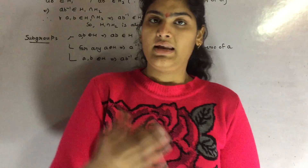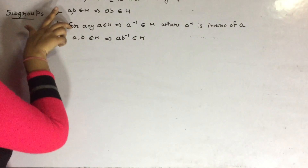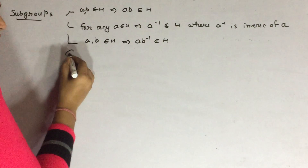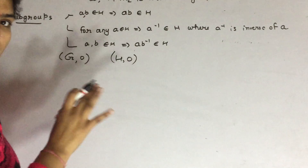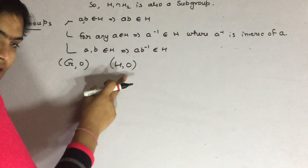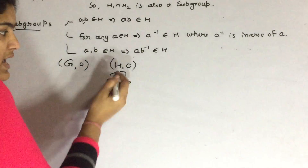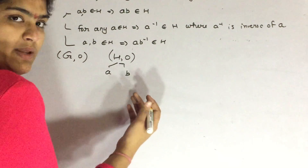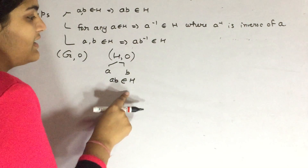Beyond this, subgroups have more properties. Let us suppose we want to prove any element as a subgroup — you have to keep these three conditions. This is the part of theorem number one, and this is the part of theorem number two. If your group is denoted by G on operation O, and your subgroup, which is a subset of G, is denoted by H over operation O, then if we take two elements A and B which belong to H, the product A multiplied by B should also belong to H. Then only we can say that H is a subgroup.